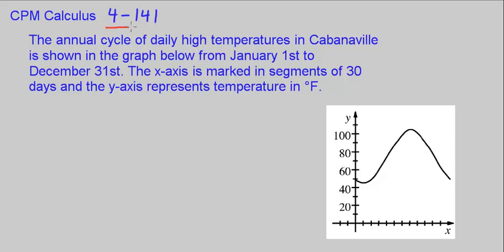This is CPM Calculus Chapter 4, Number 141. Here we're looking at a graph showing the annual cycle of daily high temperatures in Cabanaville, from January 1st to December 31st. The tick is January 1st, so every segment is approximately 30 days.